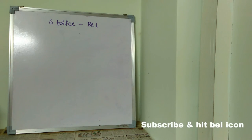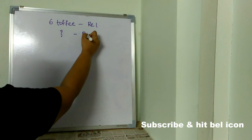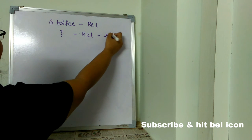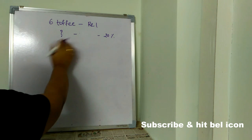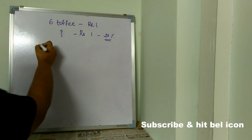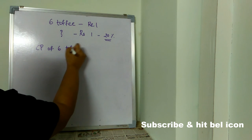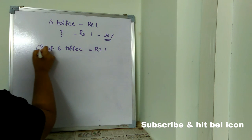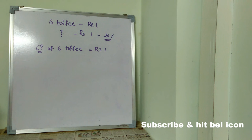Next question: A vendor bought 6 toffees for rupee 1. How many toffees does the vendor need to sell for rupee 1 to get 20% profit? Cost price of 6 toffees = rupee 1. That is the price at which the product was purchased, which is the cost price.